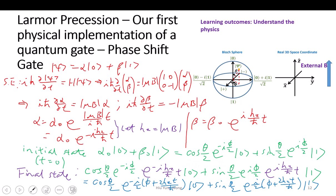So what I have shown you is that under this external magnetic field, the state changes from alpha-naught and beta-naught to this new state, which is just as if we increased phi by an angle. Because theta does not change — the theta stays the same — but the phi is changing by 2*H_Z*T/H-bar.